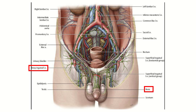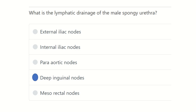Here we can see the spongy urethra is present in this area — the prostatic urethra is here, and the membranous urethra, which is very small, is in this area. This penile or spongy part of the urethra drains into the inguinal group of lymph nodes, as we can see here. So these are the inguinal group of lymph nodes.